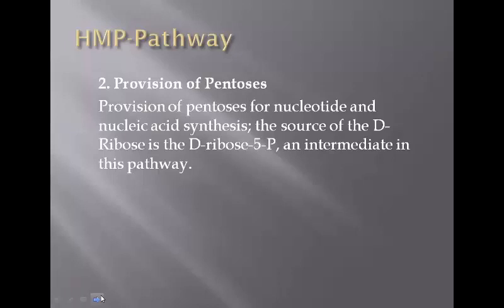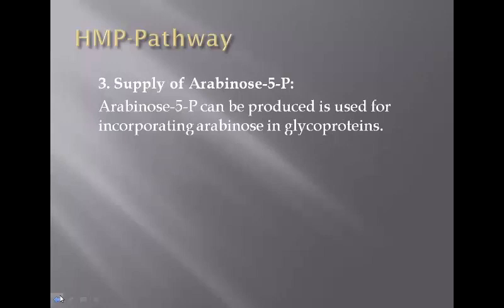The HMP pathway provides pentoses which take part in synthesis of various compounds. D-ribose 5-phosphate is involved in the synthesis of nucleotides and nucleic acids. Arabinose 5-phosphate can also be produced from the pentose forms in this pathway, and arabinose 5-phosphate has great importance in certain synthetic pathways, such as the formation of glycoproteins.